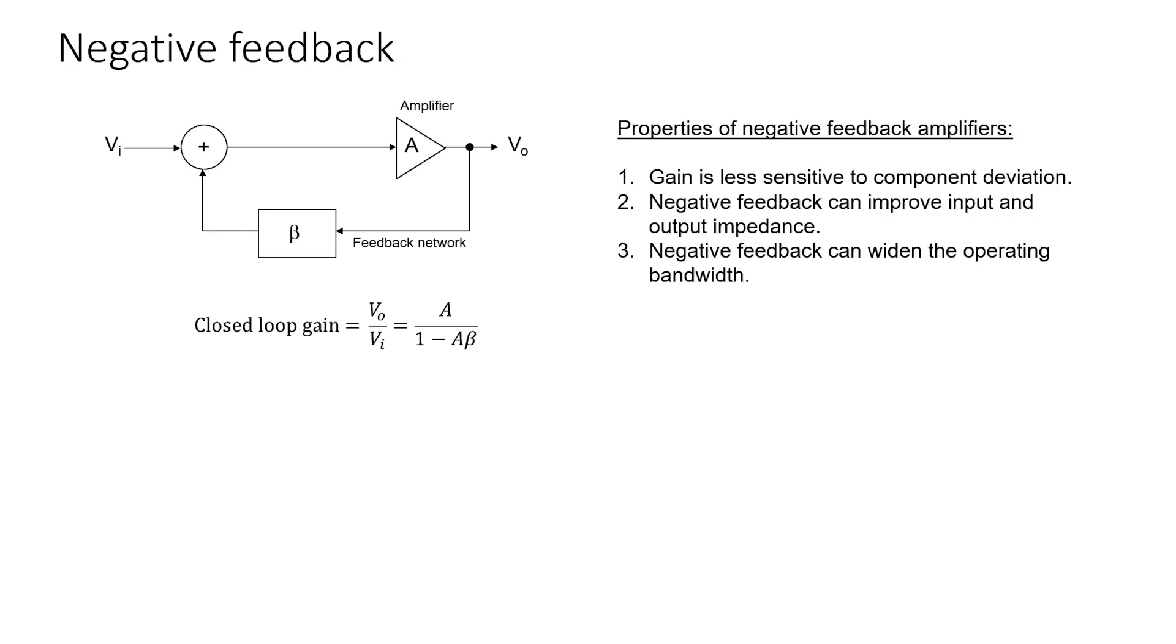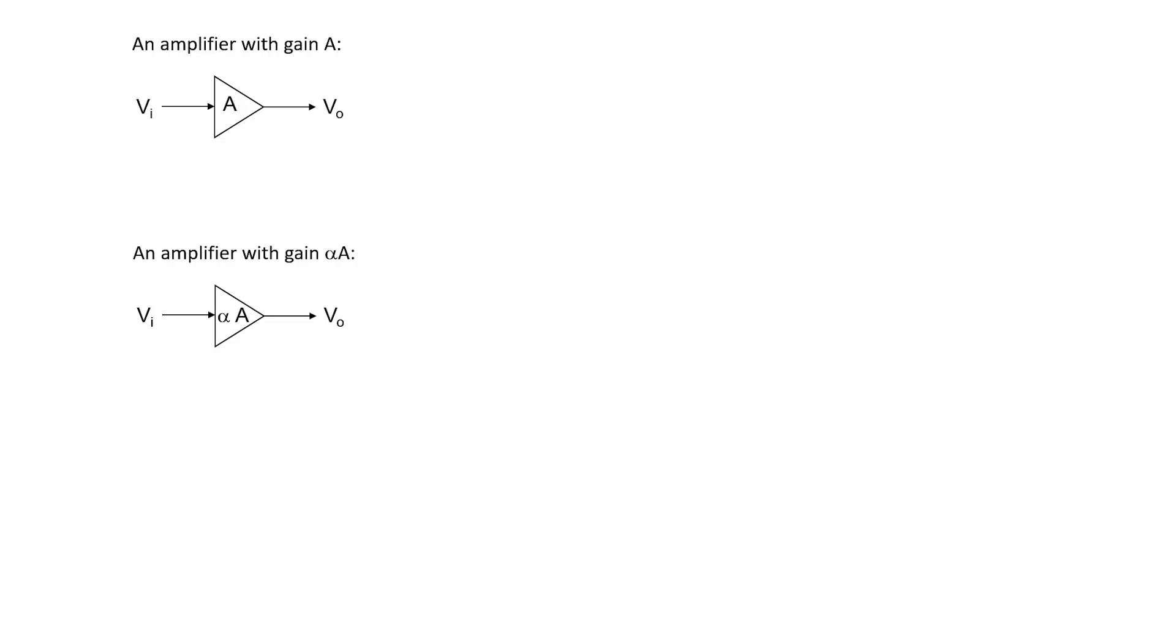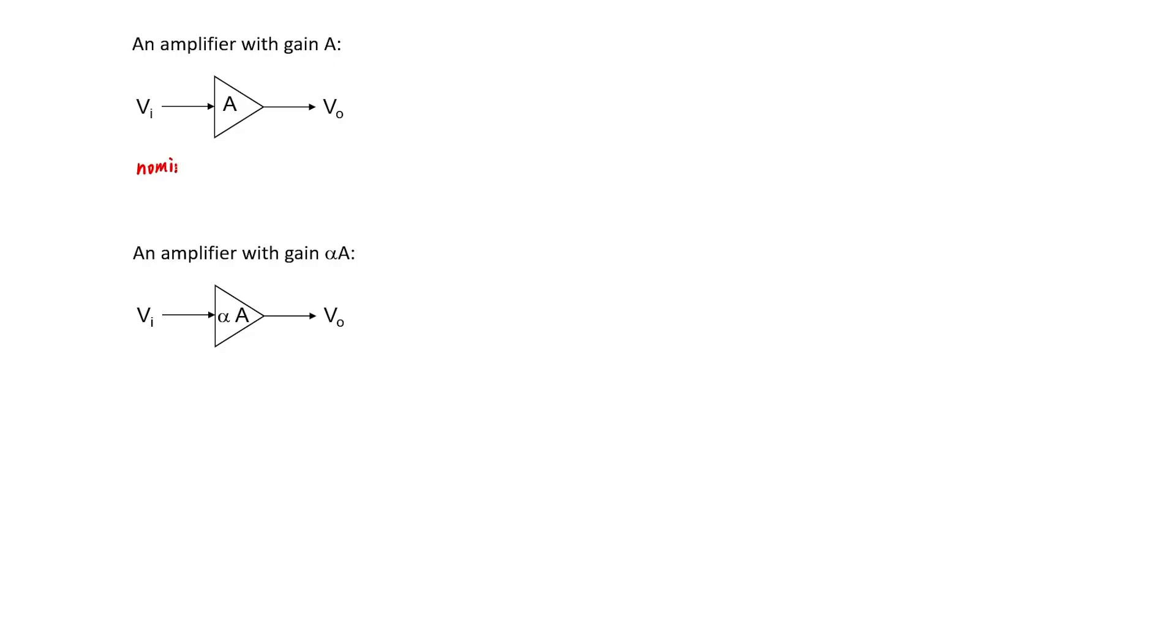There are three properties of negative feedback amplifiers that I would like to discuss in addition to the ability of negative feedback to stabilize the gain. The first property is that negative feedback makes the gain less sensitive to component deviation. Imagine that I've purchased a set of amplifiers, each with a nominal gain of A. Some of the amplifiers might not have a gain of A. They might have some other gain that's close to A, but not quite A. One of those other amplifiers might, for example, have a gain of alpha A, where alpha is some number that's close to 1. The closer alpha is to 1, the better the tolerance is for that particular component.